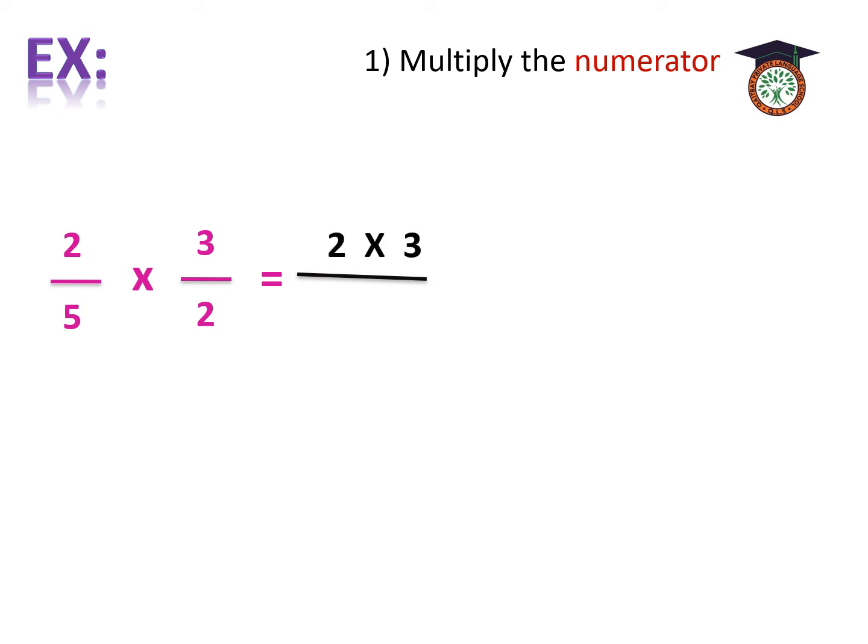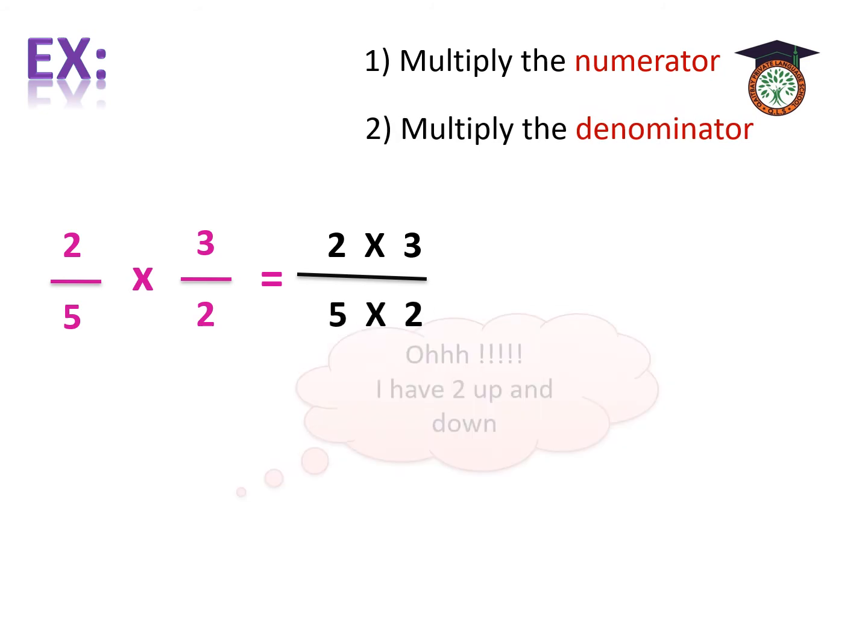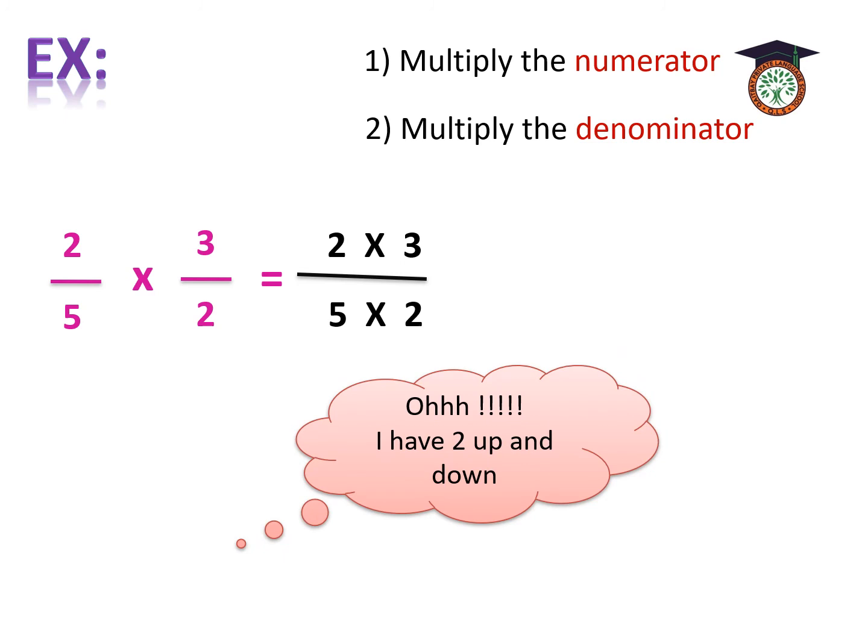Another example. 2 over 5 times 3 over 2. We are going to make the same steps. Multiply the numerator. 2 times 3. Number 2. Multiply the denominator, which is 5 times 2. Oh, we know that we have 2 up and 2 down. What shall we do from this?